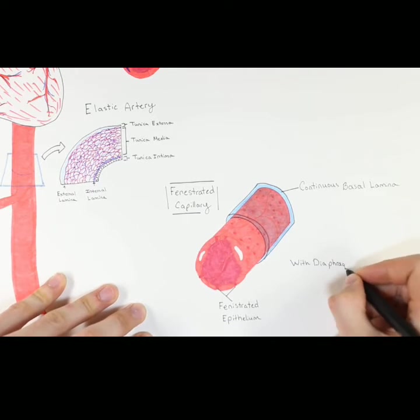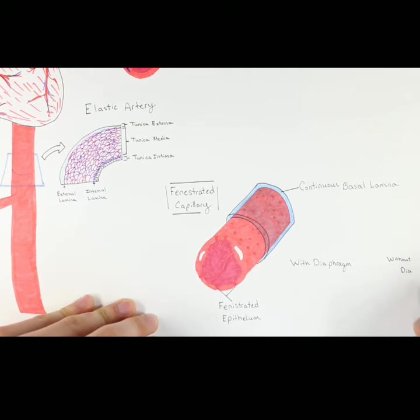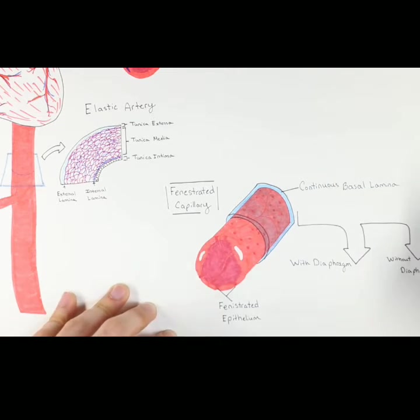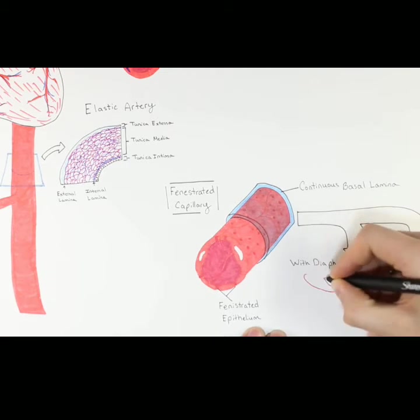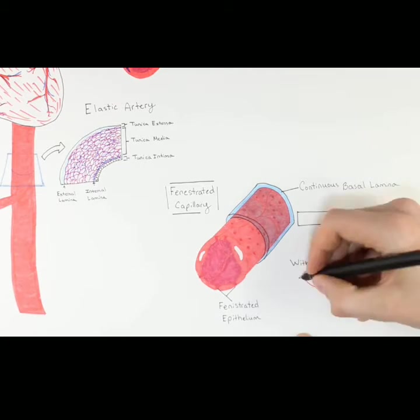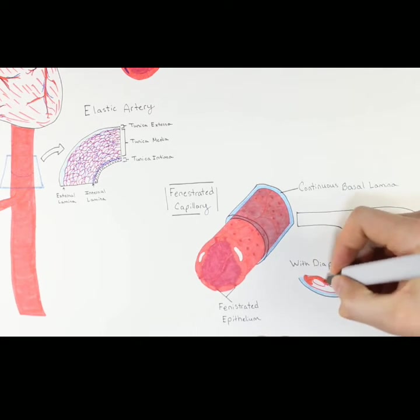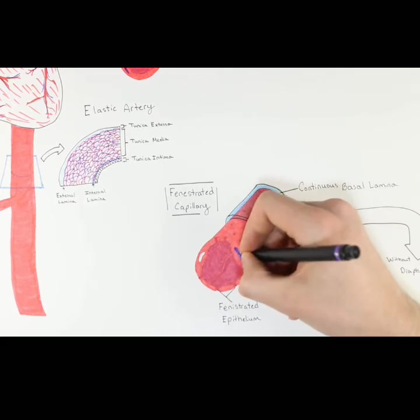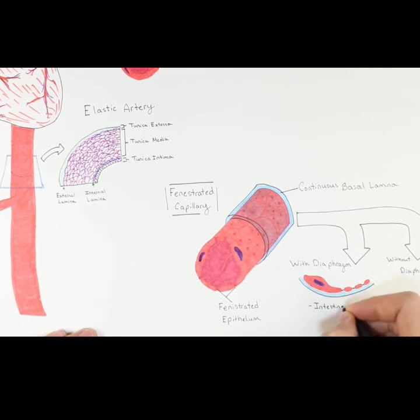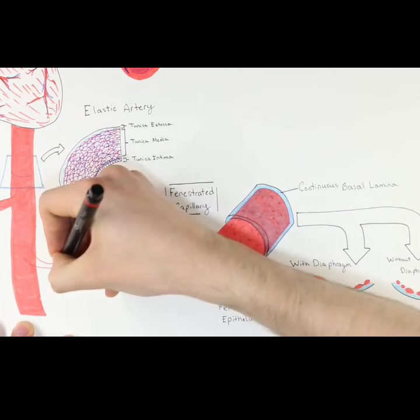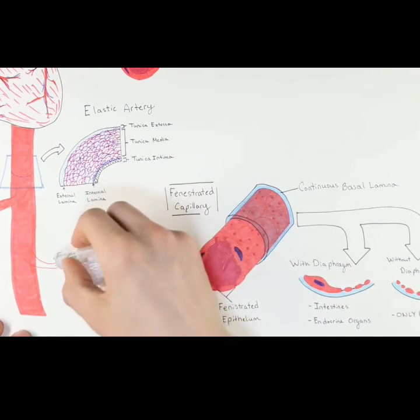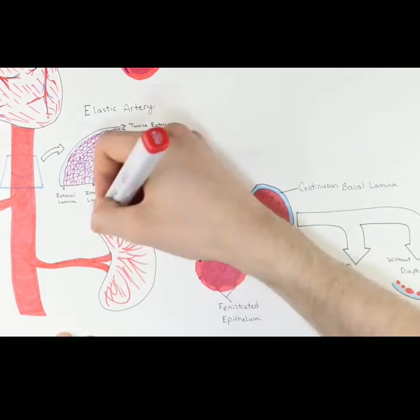Within the fenestrated capillary category, there are two subtypes, with diaphragms and without diaphragms. The diaphragms shown here are thinner than the plasma membrane and can be found covering the pores of the endothelium in fenestrated capillaries. Fenestrated capillaries with diaphragms can be found in the intestines and in endocrine organs, while fenestrated capillaries without diaphragms are only found in the renal glomerulus. I have drawn in a kidney here to remind you of this important connection.